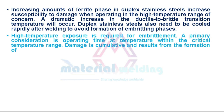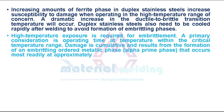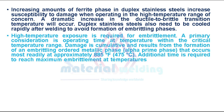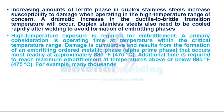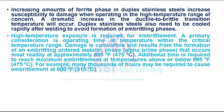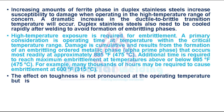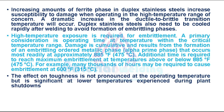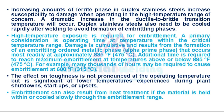High temperature exposure is required for embrittlement. A primary consideration is operating time at temperature within the critical temperature range. Damage is cumulative and results from the formation of an embrittling ordered metallic phase, or alpha prime phase, that occurs most readily at approximately 885 degrees Fahrenheit. Additional time is required to reach maximum embrittlement at temperatures above or below 885 degrees Fahrenheit. For example, many thousands of hours may be required to cause embrittlement at 600 degrees Fahrenheit or 315 degrees Celsius. The effect on toughness is not pronounced at the operating temperature but is significant at lower temperatures experienced during plant shutdowns, startup, or upsets. Embrittlement can also result from heat treatment if the material is held within or cooled slowly through the embrittlement range.